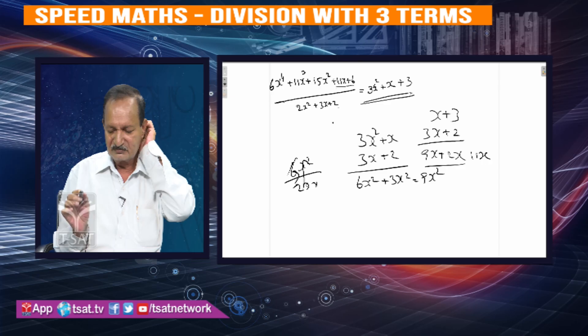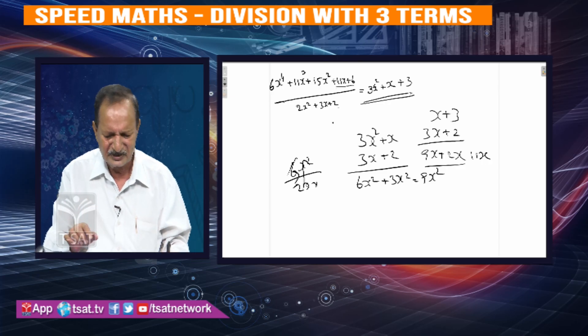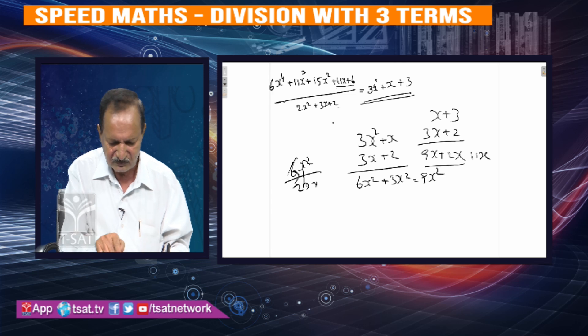Now we have 10x squared. This is the answer. First, 6x to the power of 4 by 2x squared.